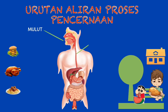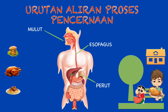Pencernaan bermula di mulut. Makanan di mulut dihancurkan oleh gigi, lidah dan air liur menjadi cebisan yang lebih kecil supaya lembut dan mudah ditelan. Kemudian, makanan akan melalui esophagus dan menjadi makin kecil di perut.